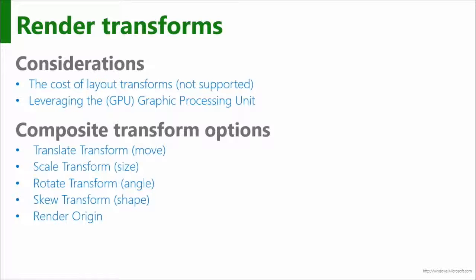So we have render transforms, and there are several types. We have the translate transform — the ability to move things around — with properties X and Y that allow us to move. We have scale, which also has X and Y properties: 1X and 1Y is 100%, but 2X and 2Y means double the size. It becomes very powerful quickly and is a neat way to implement zoom while leveraging the GPU. Rotate has the angle — a single property to manipulate. And skew lets us skew on both the X and Y axes.